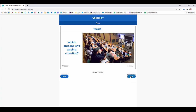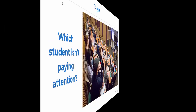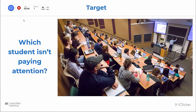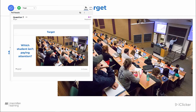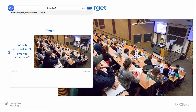They can change their answer around as long as the question is open. Once the instructor is satisfied that enough students have responded, just click that stop button. Then click on results to grade the question. I'm going to make it bigger so it's easier to grade. Simply draw a box around where you feel the correct answer is, and then click save.